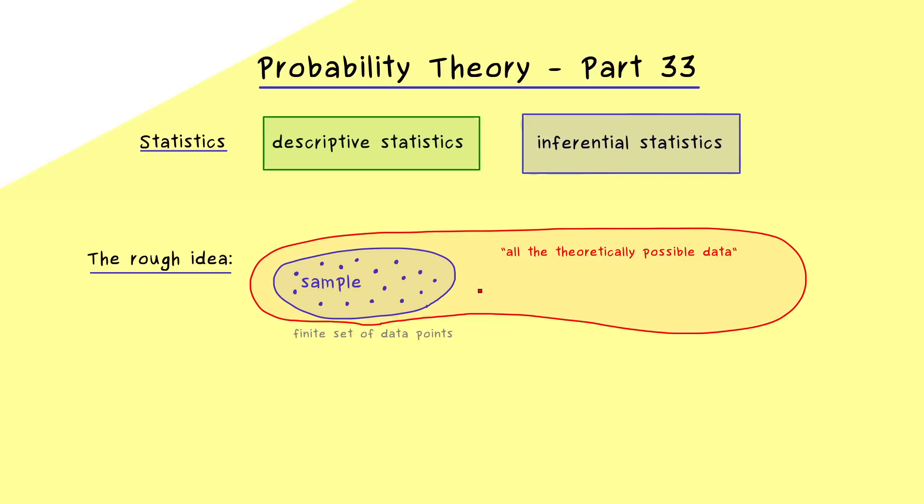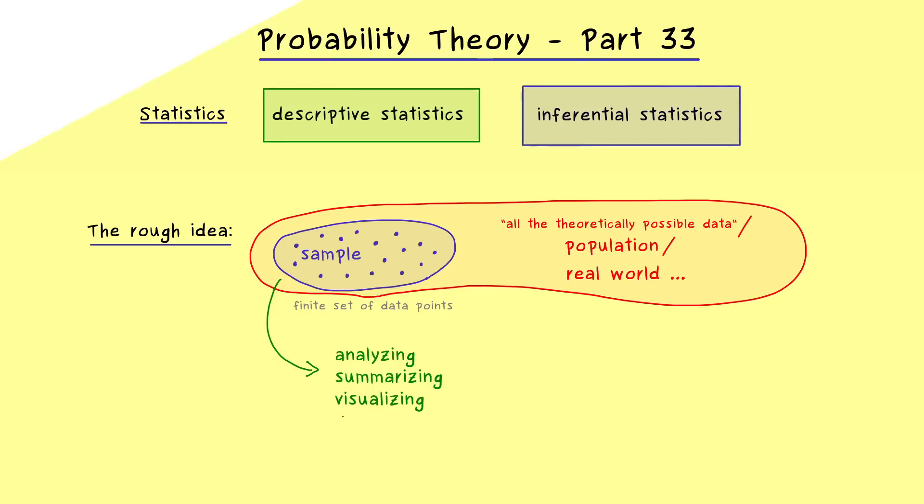And how we call that depends a little bit on the application or the context, but we could say it's all the theoretically possible data, where we only have a small sample of it. So for example, if you want to know what people think of a given political question, this would be our whole population, but you can only ask a smaller selection of people. And there statistics comes into the game, because now we can analyze our given sample. And moreover summarizing and visualizing all the data we have is usually what we put into the descriptive statistics.